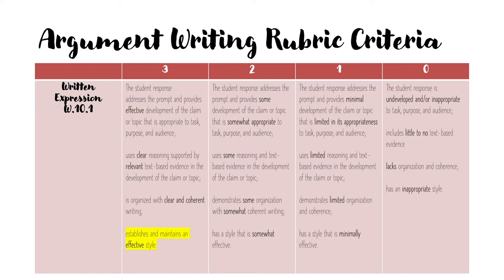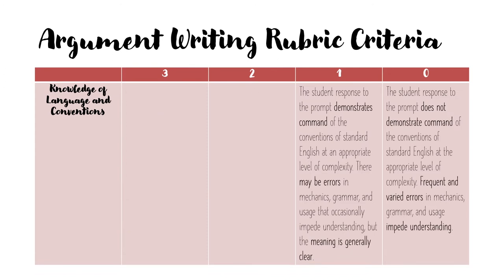Make sure you're using a formal writing style for this task, as it is an academic paper. For language and conventions, notice that for this part of the rubric you either get one point or you don't. At the 10th grade level, you want to be sure that your subjects and verbs agree, that you're using a variety of sentence types, parallel structure where appropriate, and that you've punctuated your sentences properly — a comma where a comma belongs, correct use of semicolons, and a period at the end of each sentence. While there may be errors in mechanics and grammar, your teacher wants to ensure that the meaning is generally clear, so any errors should not impede understanding.